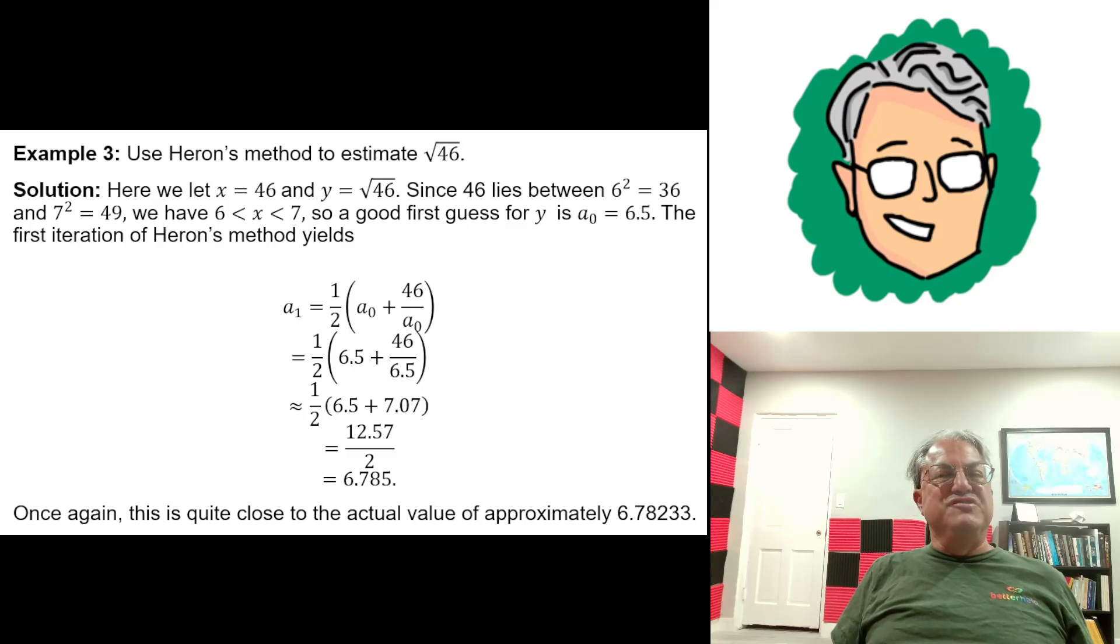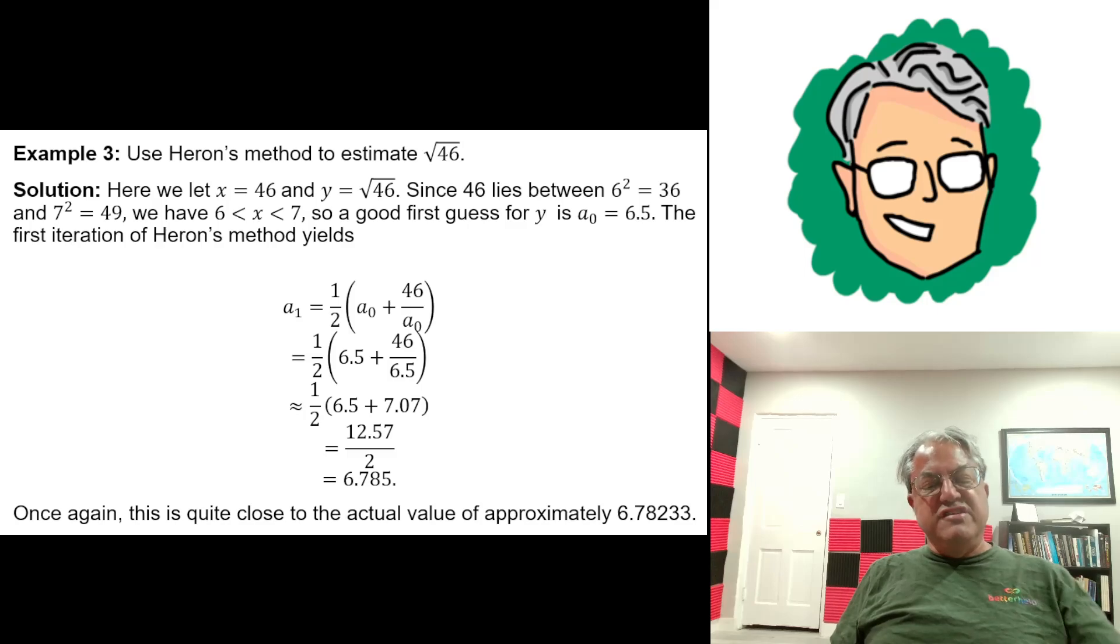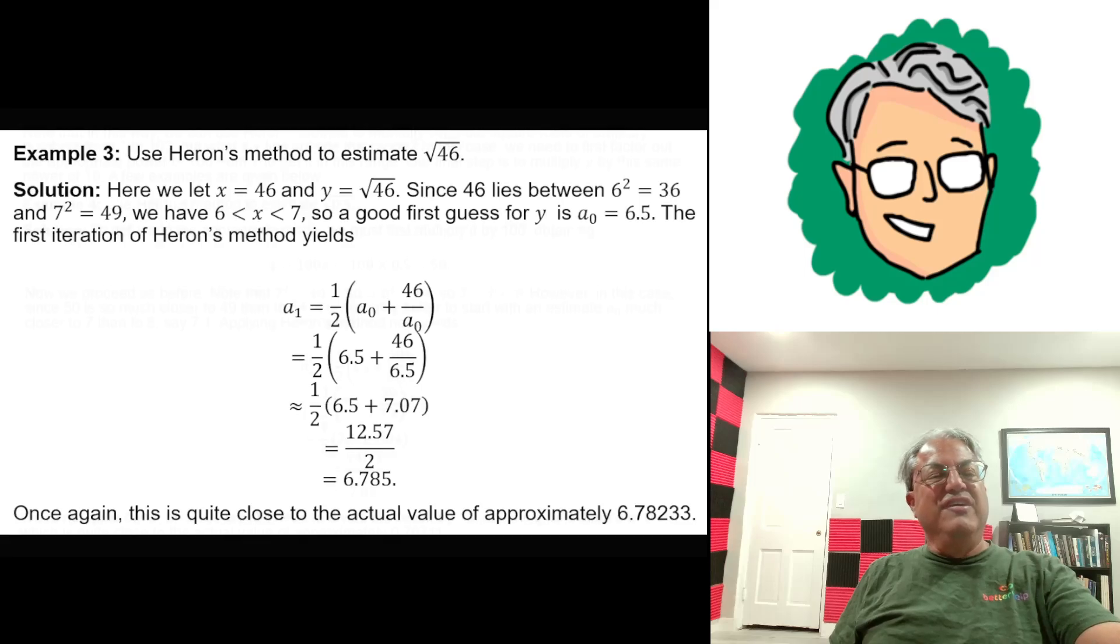Using Heron's formula, you're going to get 1/2 times 6.5 plus 46 over 6.5. This is a little bit of a tricky division to do in your head, but if you multiply 65 by 7, you get 45.5, just a little bit less than 46. You have a difference of 0.5, and 0.5 over 6.5 is 1 thirteenth, which is about 0.07. So you're going to get about 7.07 for 46 over 6.5. You get 6.5 plus 7.07 over 2. 6.5 plus 7.07 is 13.57. Divide that by 2, you get 6.785. And again, that's very close to the right answer, 6.78233. Pretty remarkable. Each time we're getting an answer that's only about a tenth of a percent off. And you can do this in your head. Pretty amazing.